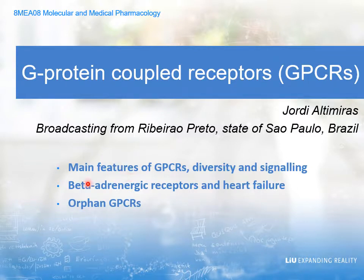The first part will discuss the main features of GPCRs, their diversity and signaling, and that's what you are going to be listening to immediately. The second part is going to be on beta-adrenergic receptors and heart failure — beta-adrenergic receptors are the best known G protein coupled receptors. And finally, I will be discussing orphan GPCRs. If the technology allows, I'll be following this lecture live via Skype so you can ask questions.